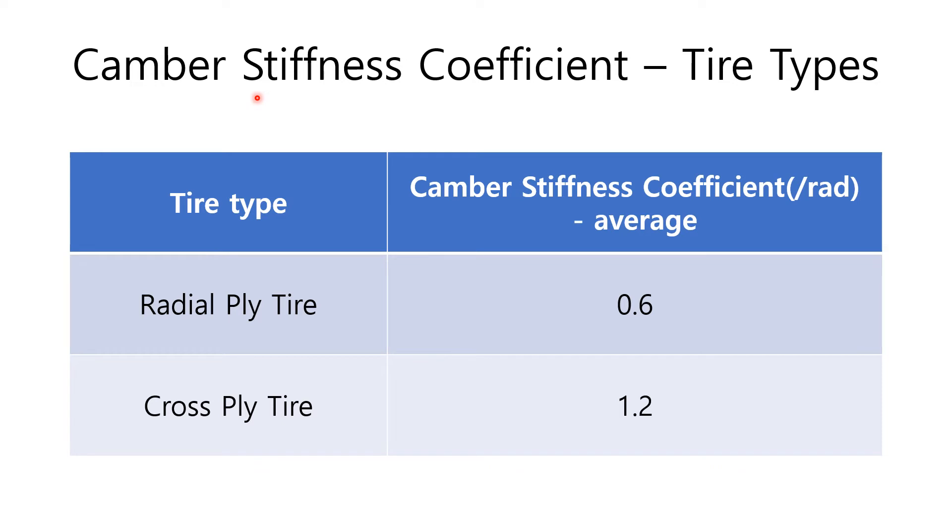As mentioned in the previous slide, camber stiffness coefficients are different depending on tire types. Its unit is per radian. Its value is 0.6 for radial-ply tire and 1.2 for cross-ply tire. Camber stiffness is different depending on tire structures. Radial tires usually produce lesser camber thrusts and moments than those of cross-ply ones, because radial tires have flexible sidewalls compared with those of cross-ply ones.